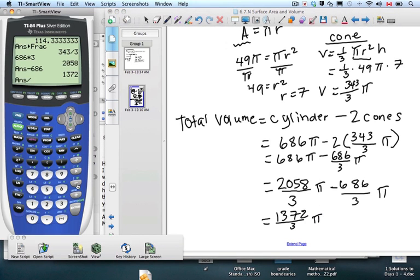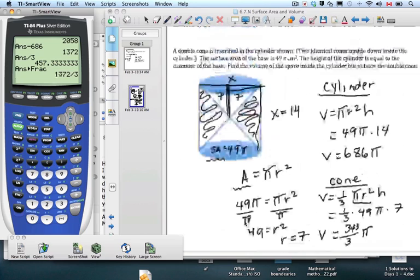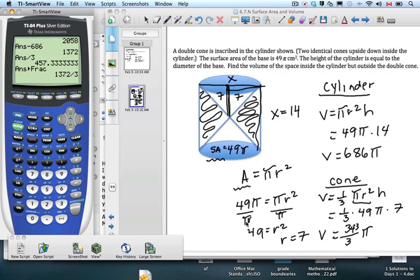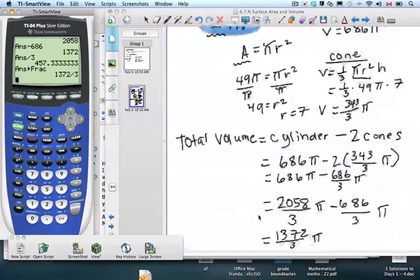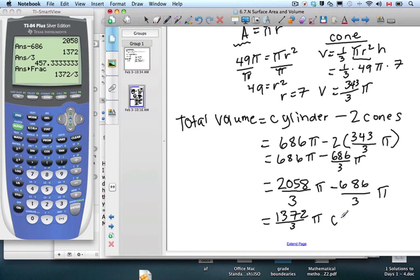I wonder if that divides nicely by 3. Let's see. No, not nicely. Let's change it to fraction. That's already reduced. So what is our units, though? If we go back up to the top of the page, we can see that it was centimeters squared. So this will be centimeters cubed.